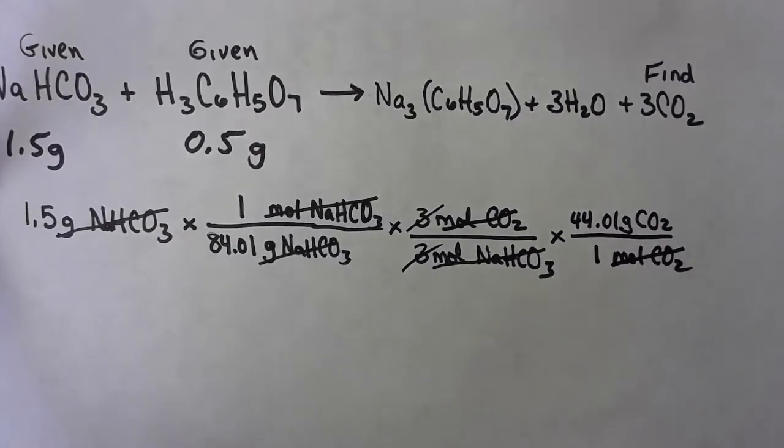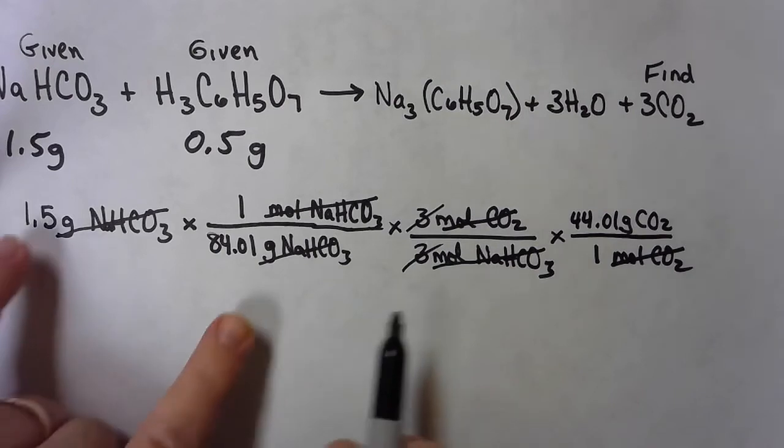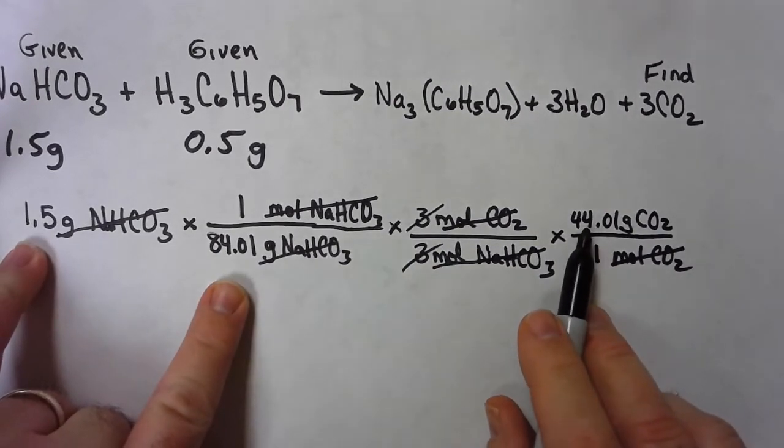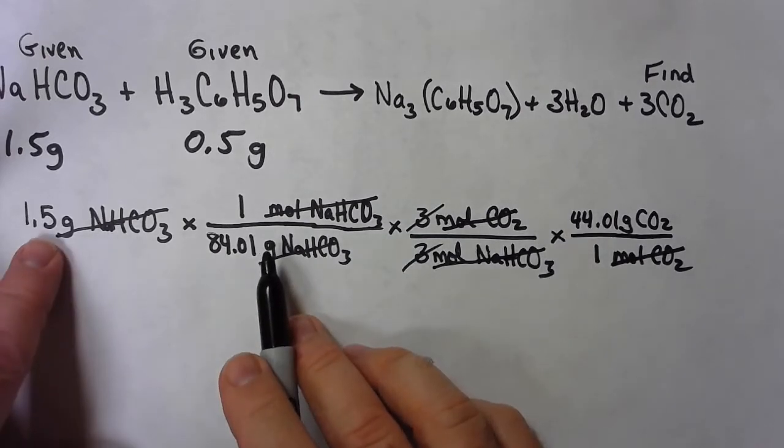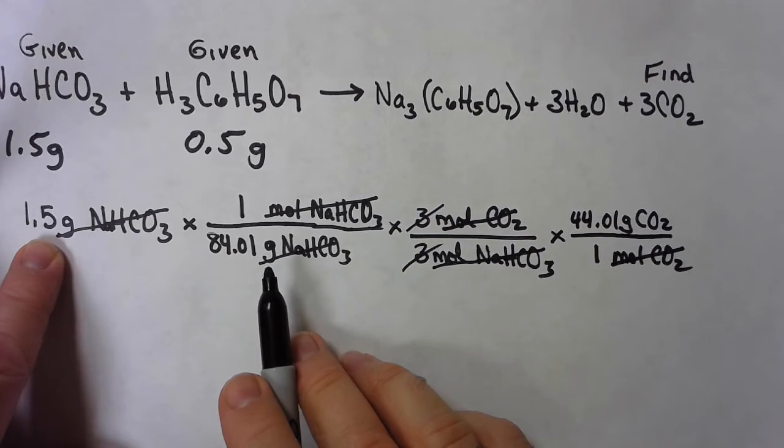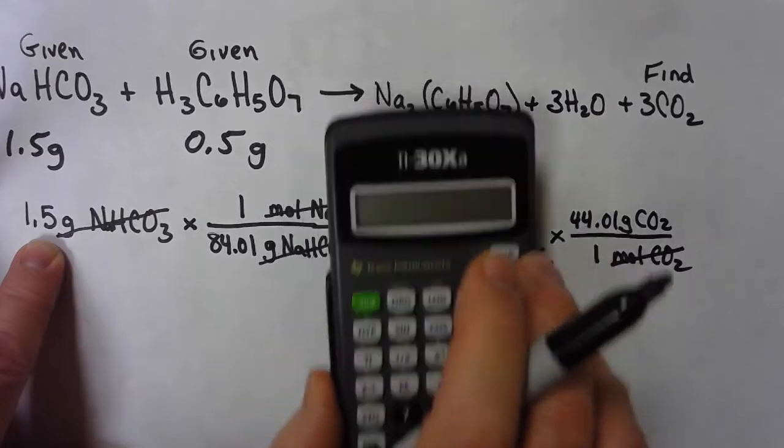I'm going to do one more step before I get to that math. See that three over three. Now I like to, at this point, try to get an estimate of an answer that seems reasonable because, you know what, when I punch numbers in the calculator, sometimes I miss. Sometimes I hit the wrong button. So I like to have an estimate of what my answers might be. So everything is canceled except for these three numbers. And 44 over 84 is just slightly more than half. So a little more than half times one and a half. That's not a very big number. One and a half times a half, that's about three quarters.